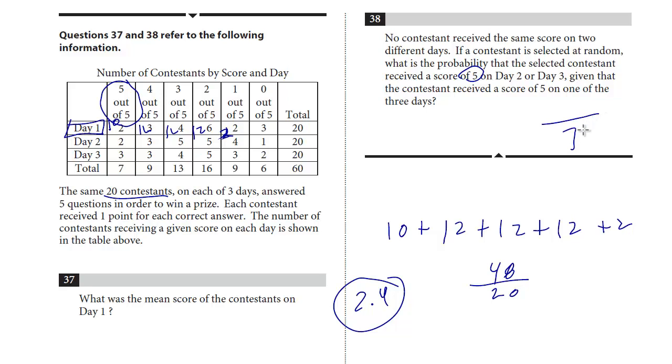And so how many contestants total in all three days received a five? Well, it's seven. We want the probability that the randomly selected contestant received a five on two or three. So how many contestants received a five on two or three? Well, two on day two.